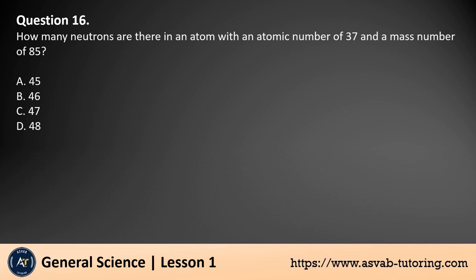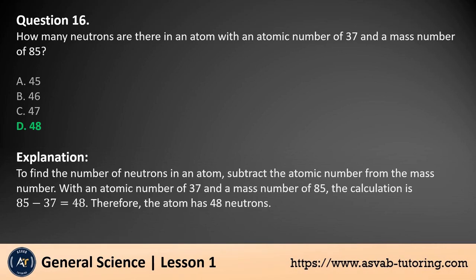Question 16. How many neutrons are there in an atom with an atomic number of 37 and a mass number of 85? a. 45. b. 46. c. 47. d. 48. The answer is d. To find the number of neutrons in an atom, subtract the atomic number from the mass number. With an atomic number of 37 and a mass number of 85, the calculation is 85 minus 37 equals 48. Therefore, the atom has 48 neutrons.